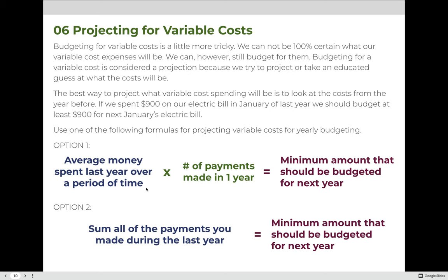If you are told an average amount spent per month, multiply that average by the number of payments per year to get the total budget. For example, if average monthly maintenance spending was $1,700, multiply by 12 to get the minimum budget for the following year. Alternatively, you can add up all the payments from the previous year directly. For the electric bill, add up the 12 payments from the prior year and budget at least that much for the following year.